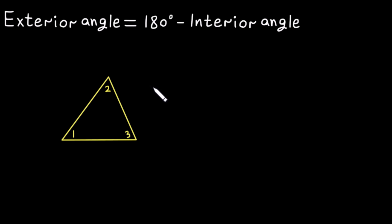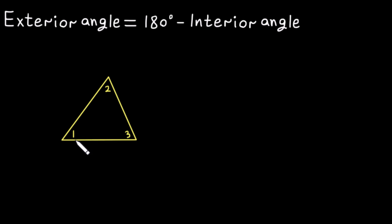In this video we'll explain why there are two exterior angles at a vertex and why they are equal. For example, at this vertex we can have two exterior angles — either if we extend this side or this side. The same thing here: if we extend this side we will have an exterior angle, and if we extend this side, the exterior angle will be here.